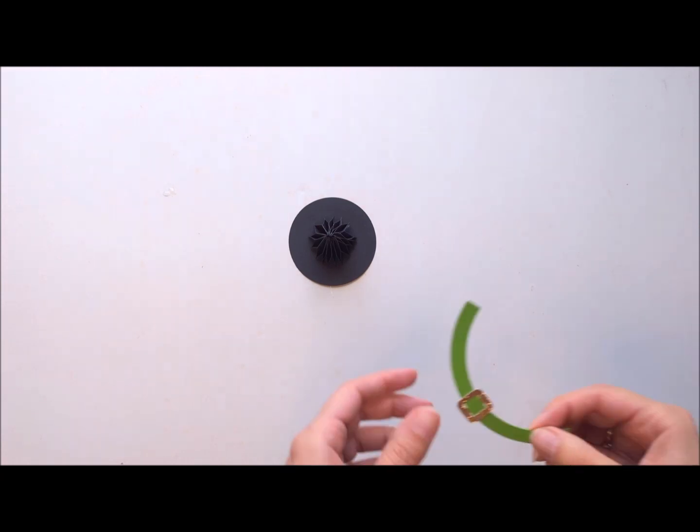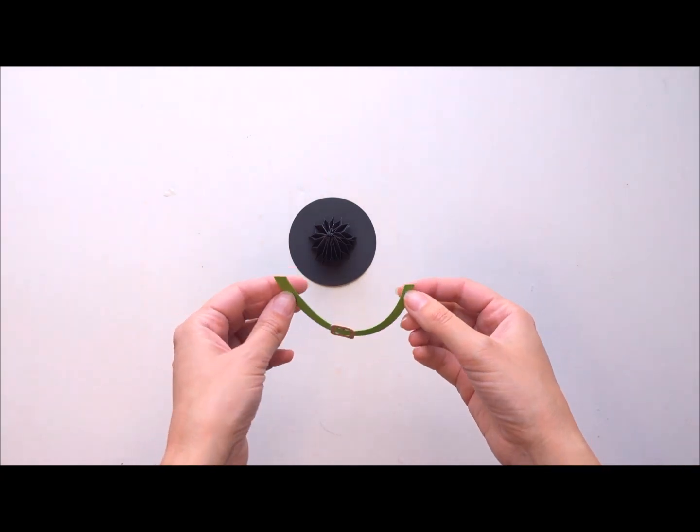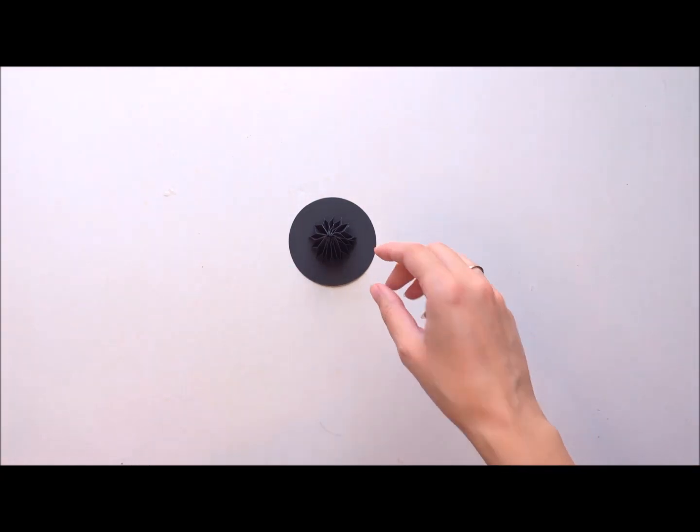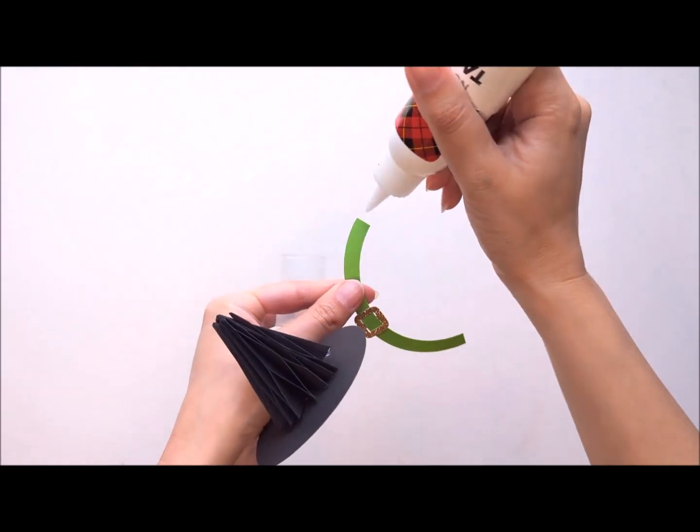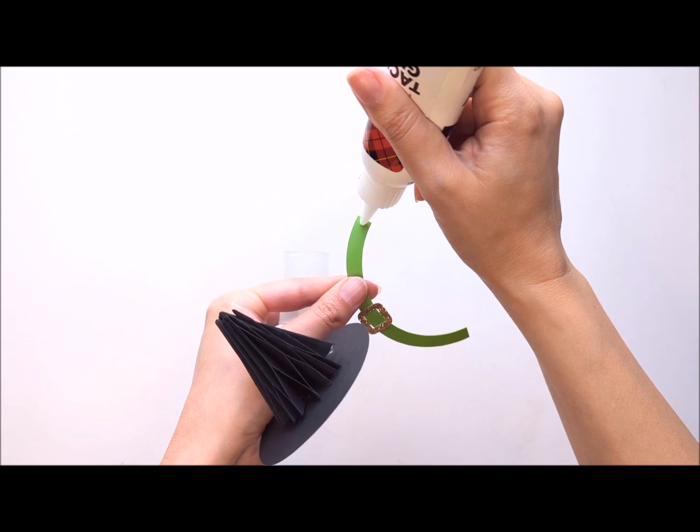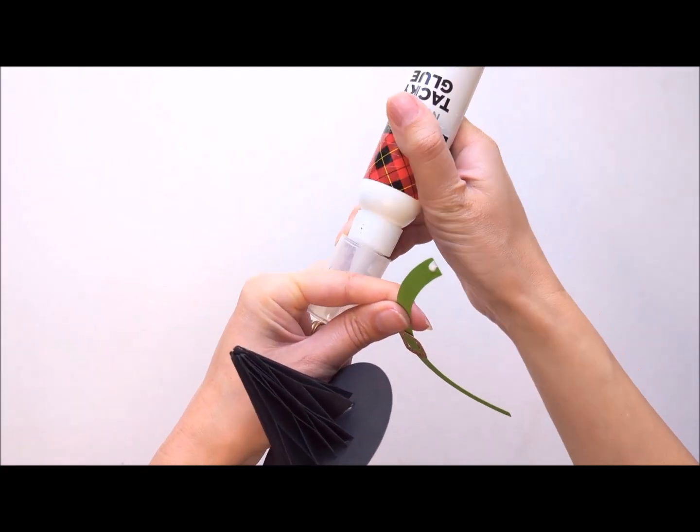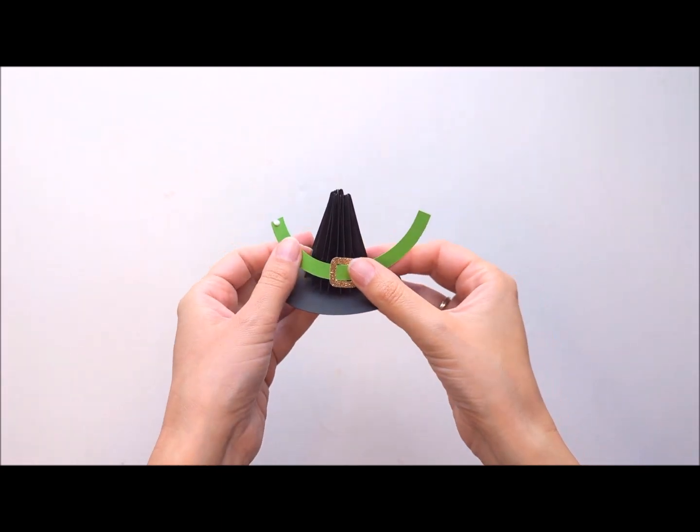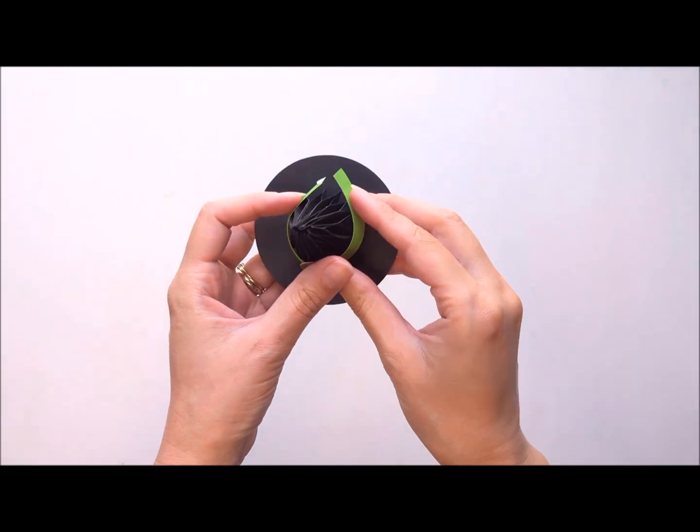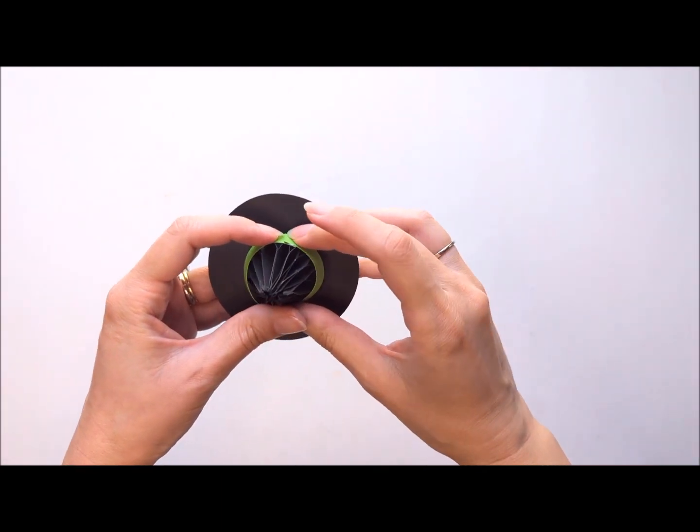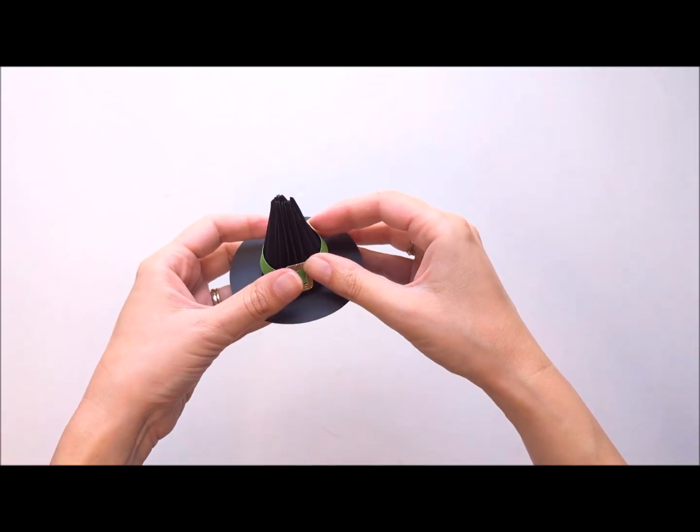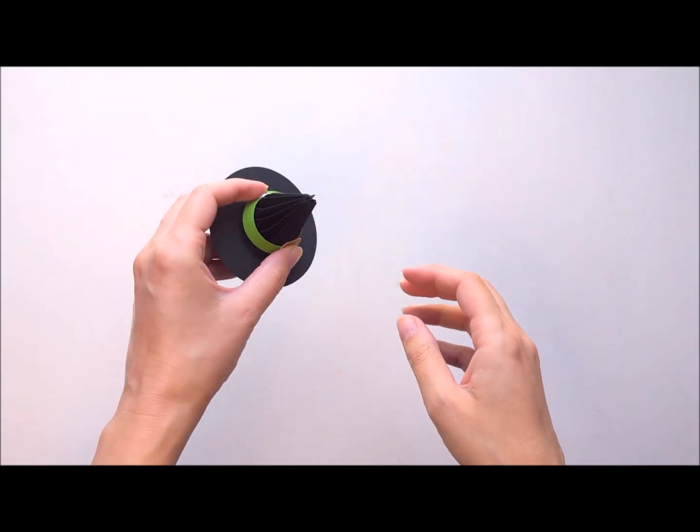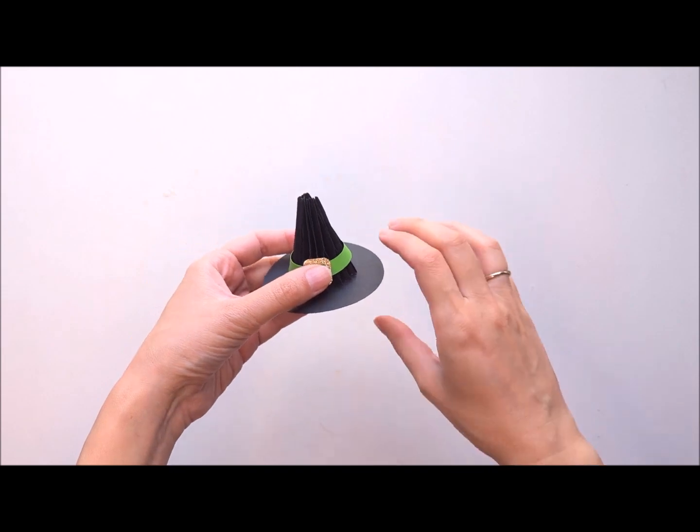And then last, we're going to take our hat band. We're going to wind it around the bottom of our hat. And you can put a little dot of glue just at the end so that you can stick the two ends together. And it's going to sit above the brim just a little bit. And you can just kind of keep your finger there until that glue dries to keep the band together.